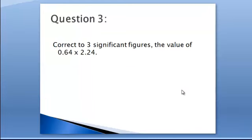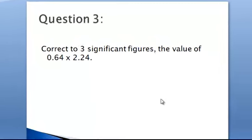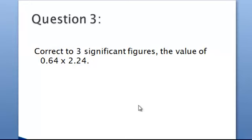Question 3 asks us to correct to three significant figures the value of 0.64 times 2.24. This question has two parts: first, find the value of this multiplication of two decimals, and then find that product to three significant figures.